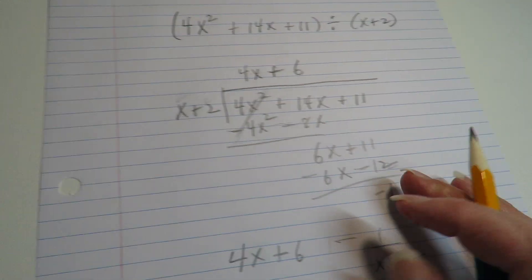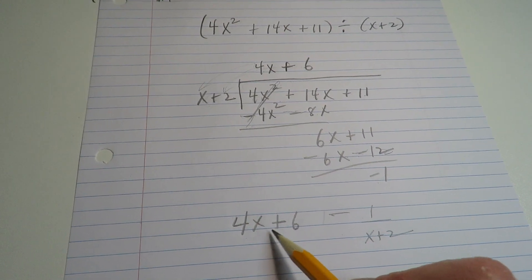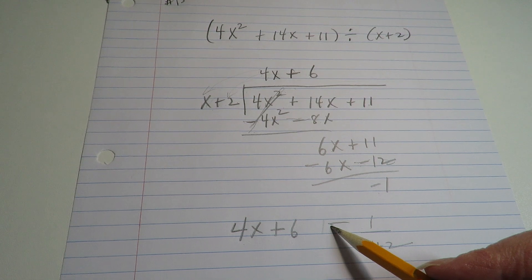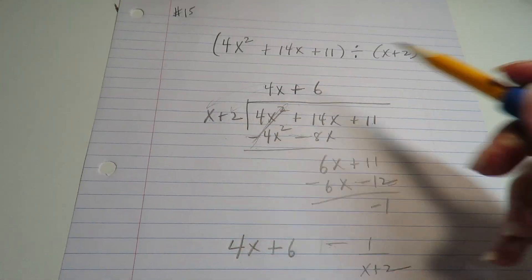And then when you add that, that's negative 1. So the quotient is 4x plus 6, and then you have the remainder of negative 1 over the divisor.